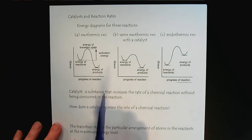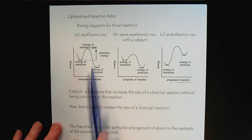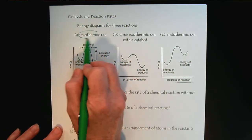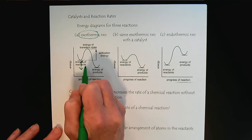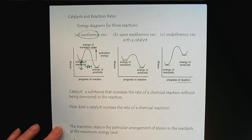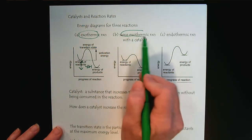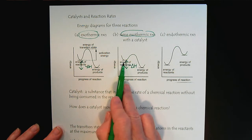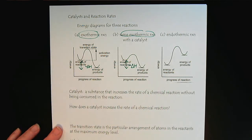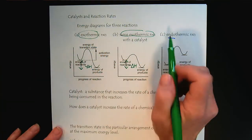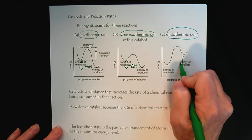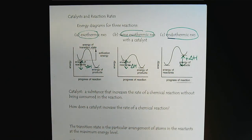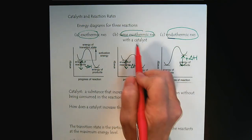Let's take a closer look at catalysts. Here we have a couple of reaction energy diagrams — an exothermic reaction showing a negative delta H, and the same exothermic reaction with a catalyst showing the same magnitude delta H. We also have an endothermic reaction with a positive delta H. Now let's look at the effect of the catalyst.